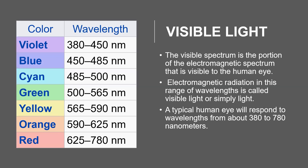Visible light is the part of the spectrum that our eyes can see. Light is an electromagnetic wave, and its color depends on its wavelength. When wavelengths are short, around 380 nanometers, we perceive them as blue or violet. When they're longer, around 700 nanometers, we perceive them as red. A typical eye can see wavelengths from 380 to 780 nanometers.